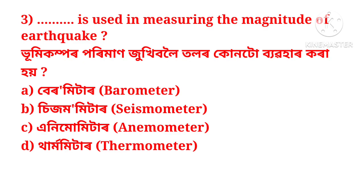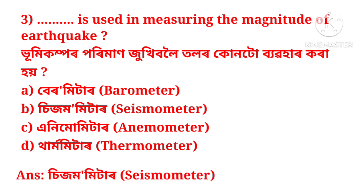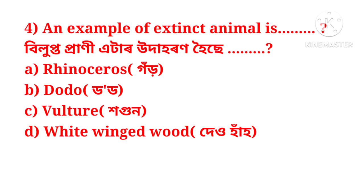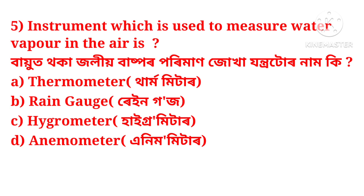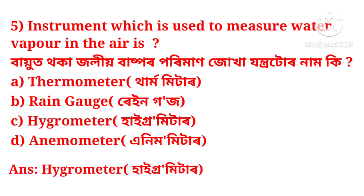The next question is: what instrument is used in measuring the magnitude of an earthquake? Another question: what instrument is used to measure water vapor in the air? The options are: thermometer, ringoze, hygrometer, or anemometer. The correct answer is hygrometer.